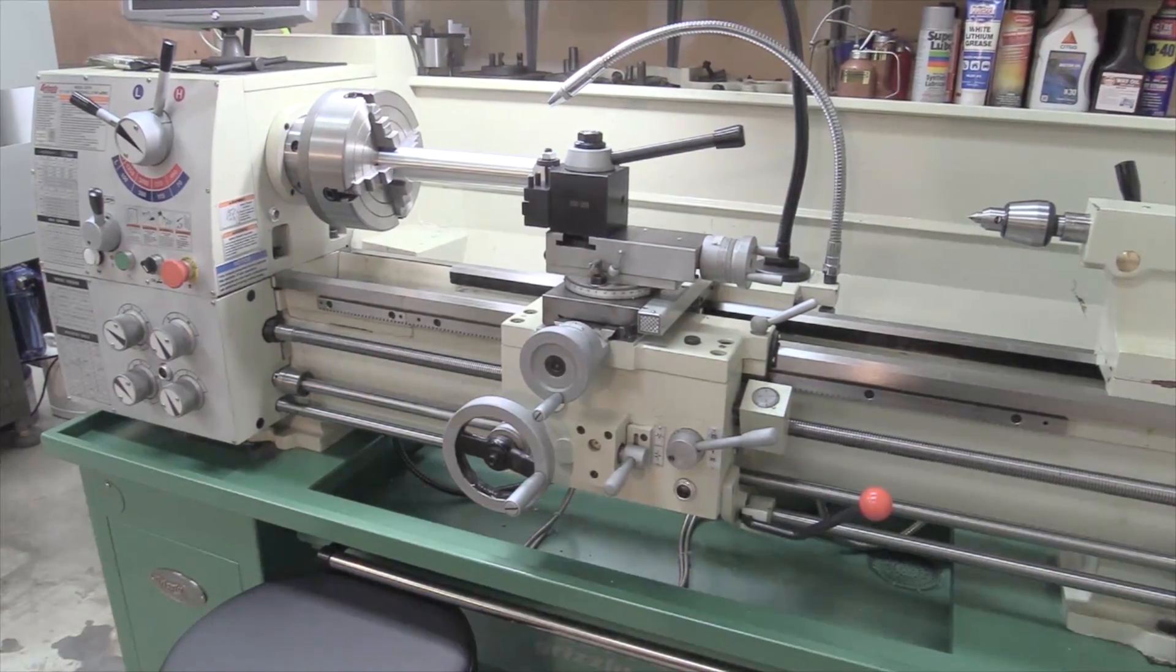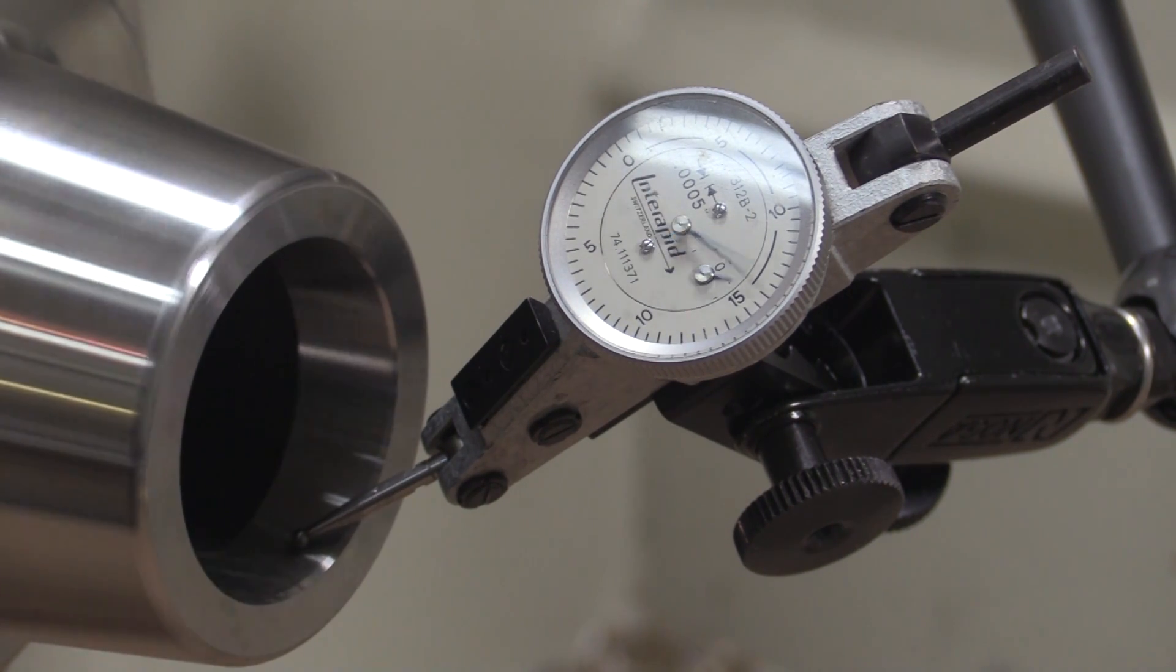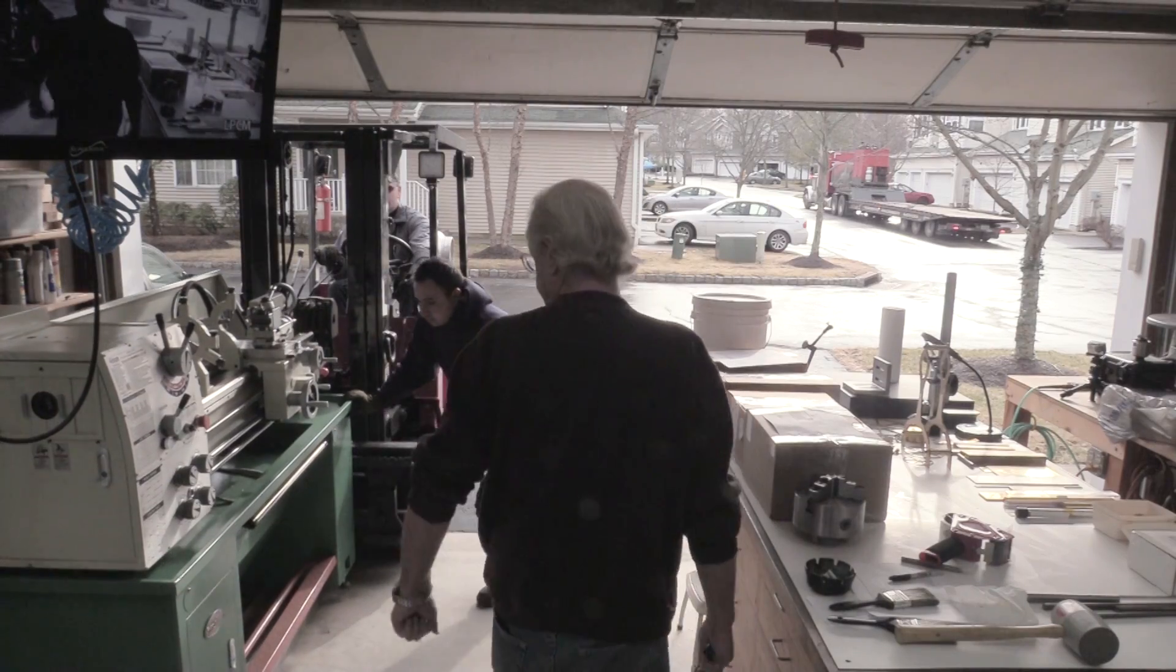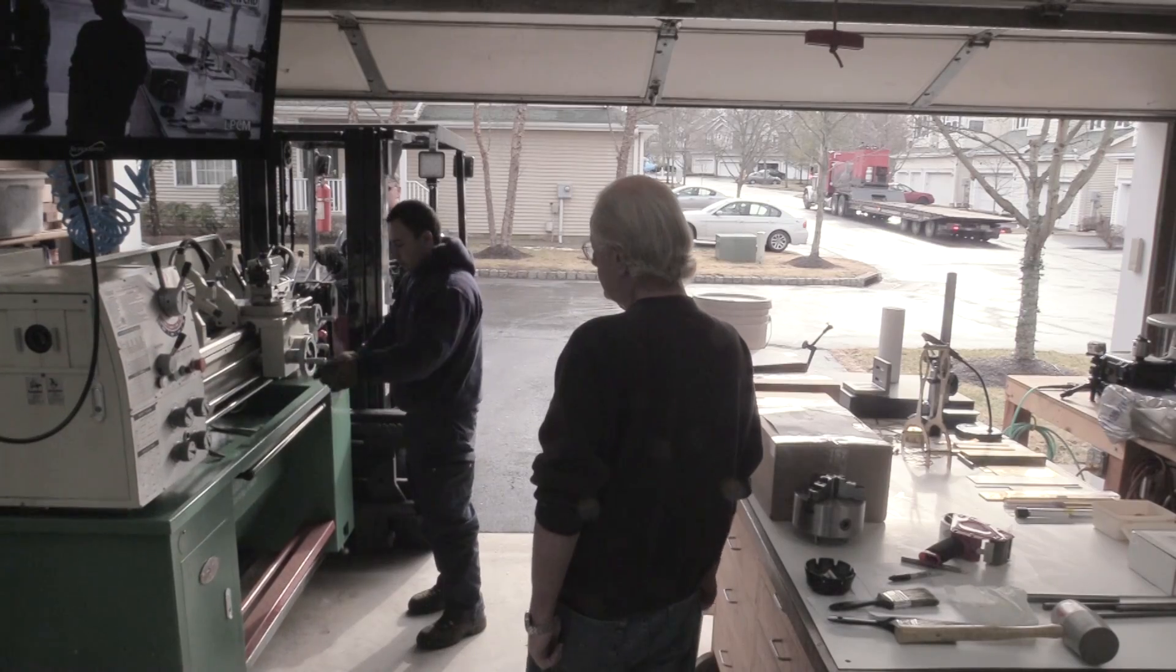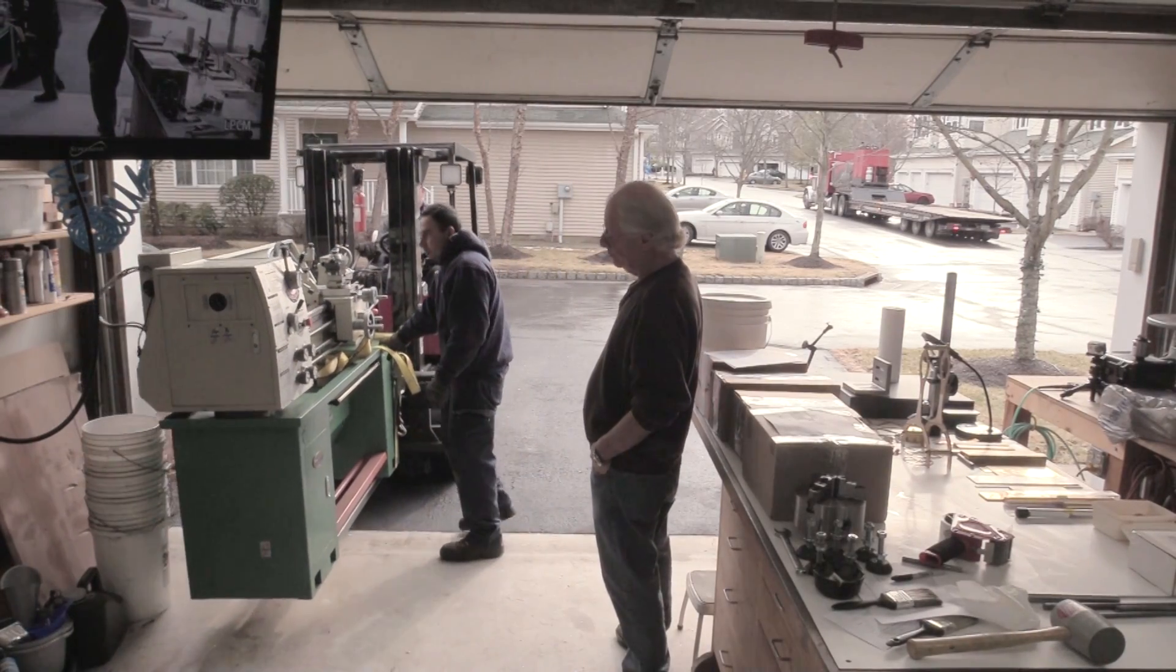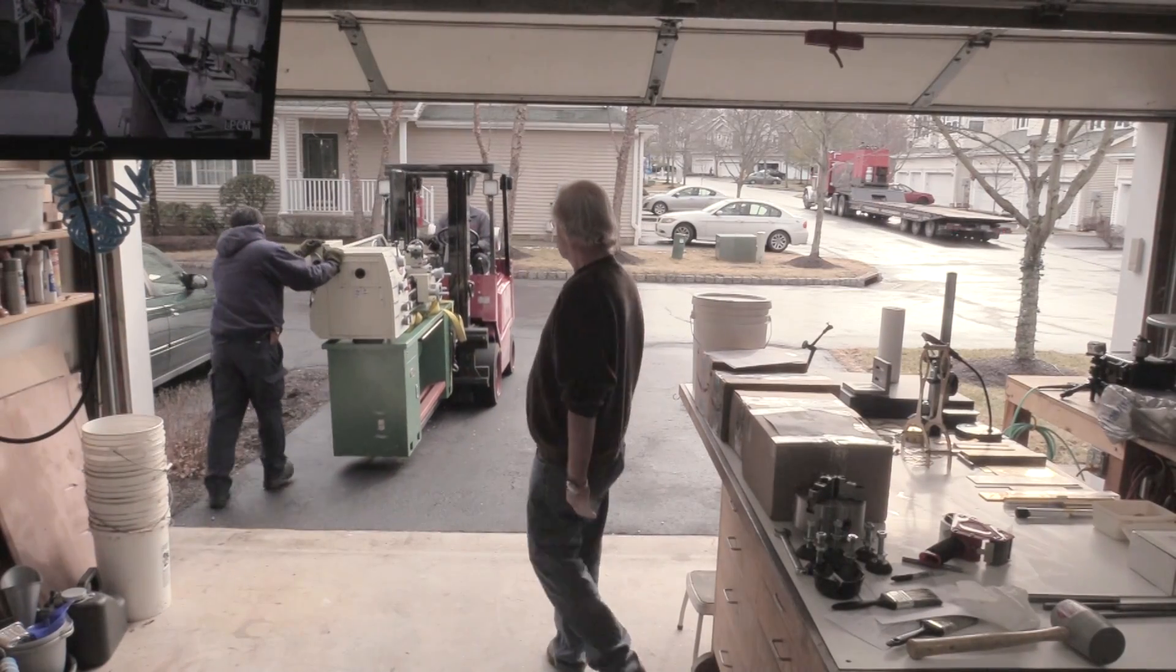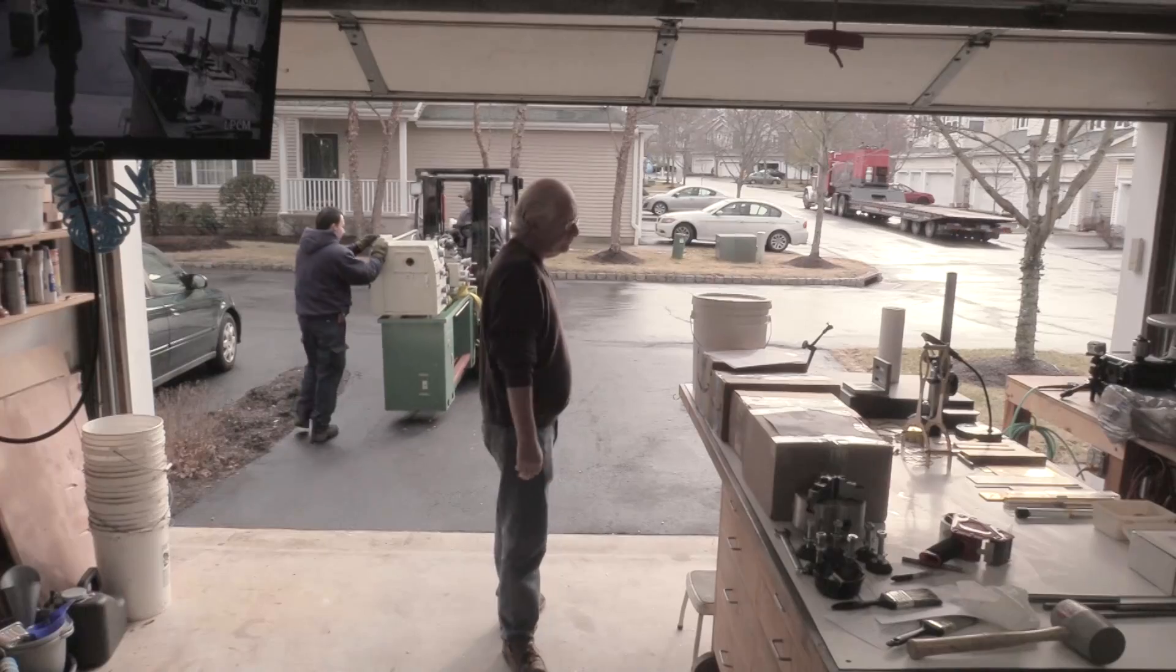But as I began using the lathe, I realized that it had a serious runout problem. This turned out to be a manufacturing defect in the lathe itself, and it couldn't be repaired on site. Grizzly was good enough to take the lathe back and refund all my money, but then I had a decision as to what to do next, and I decided to buy the Tormach Slant Pro lathe, which is a full CNC machine.